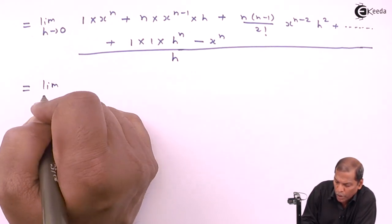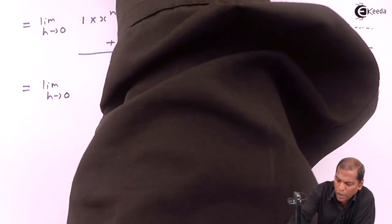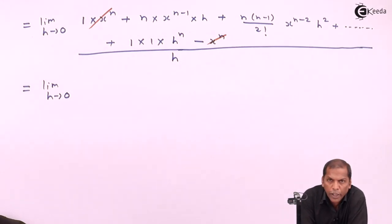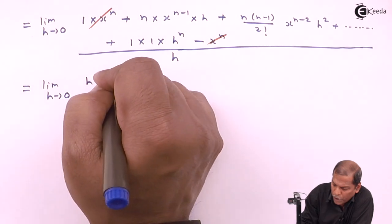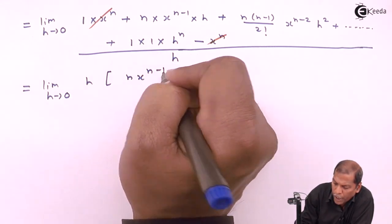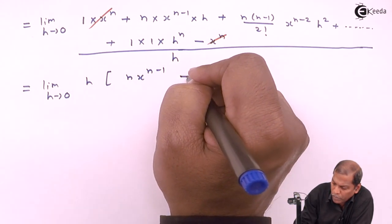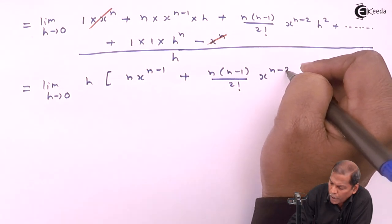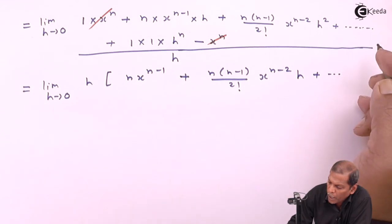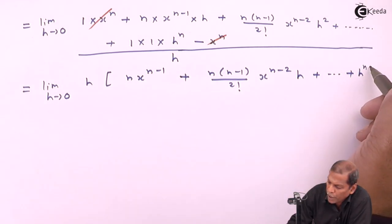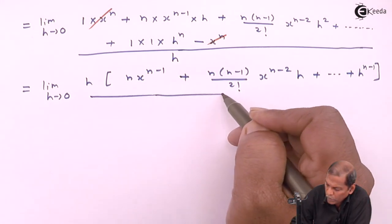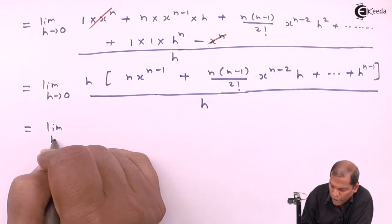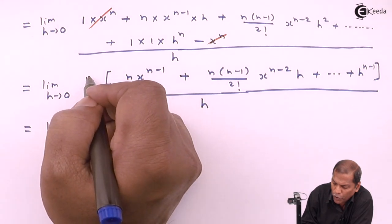So that equals limit h tends to zero. Here we cancel +xⁿ and −xⁿ in the numerator. From the remaining terms we take h as common, so we have h in bracket: n·xⁿ⁻¹ + n(n−1)/2! · xⁿ⁻²·h + ... + hⁿ⁻¹, and the whole thing divided by h.